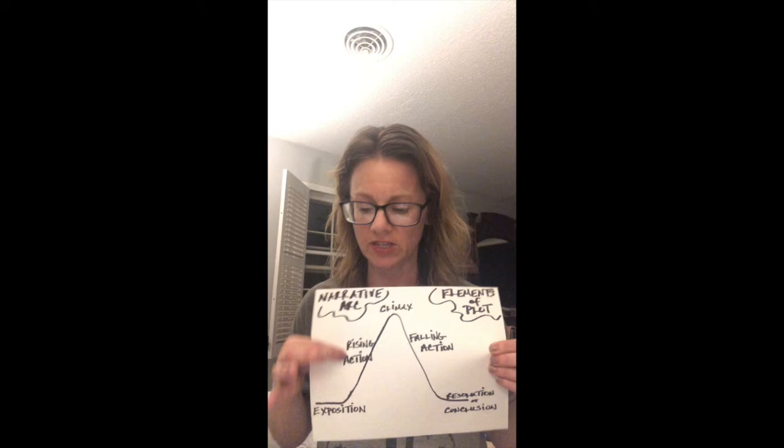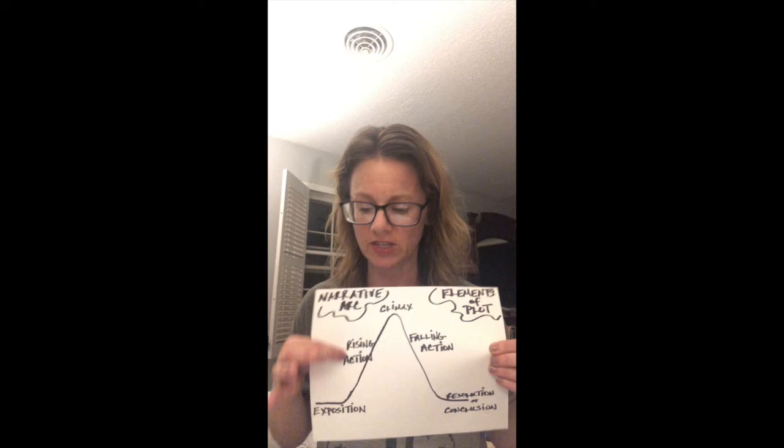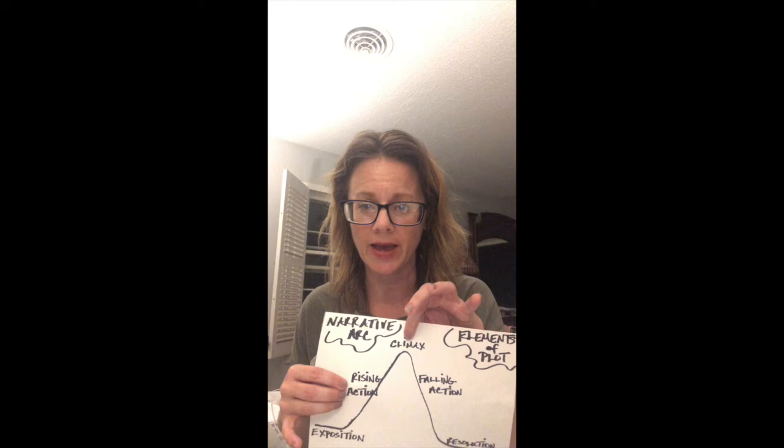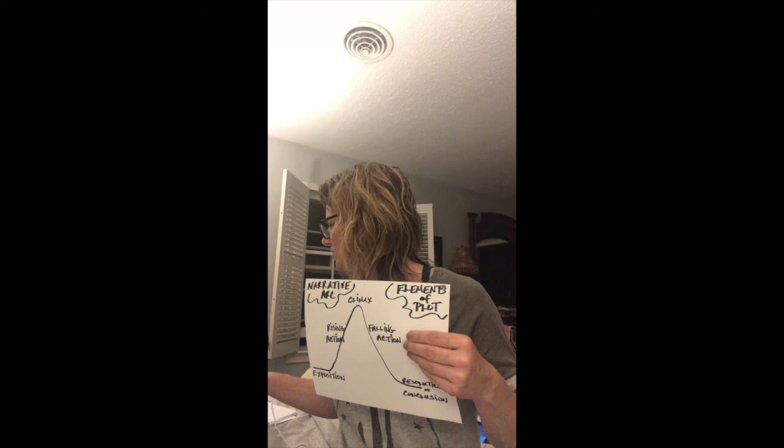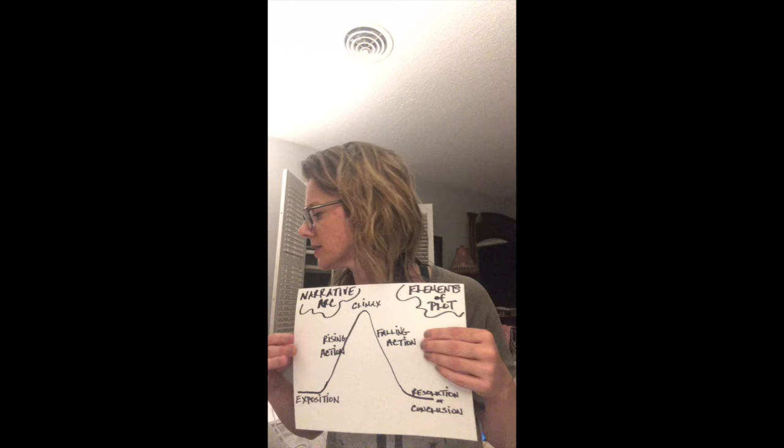So to review: exposition is setting; rising action is everything that starts to happen when conflict is revealed; climax is the highest point of tension or when the main question is answered; falling action is where the main part of the story resolves after the climax; and the resolution is anything that happens at the end — like the windmill and her making her way home, after which we don't know anything more about her.